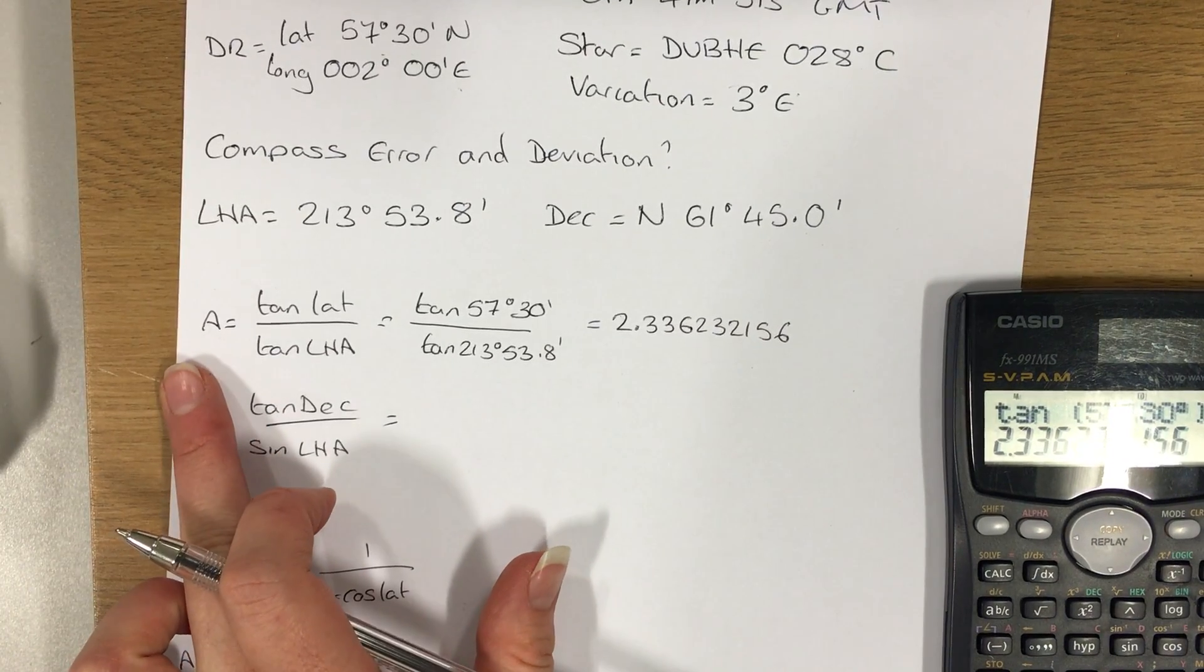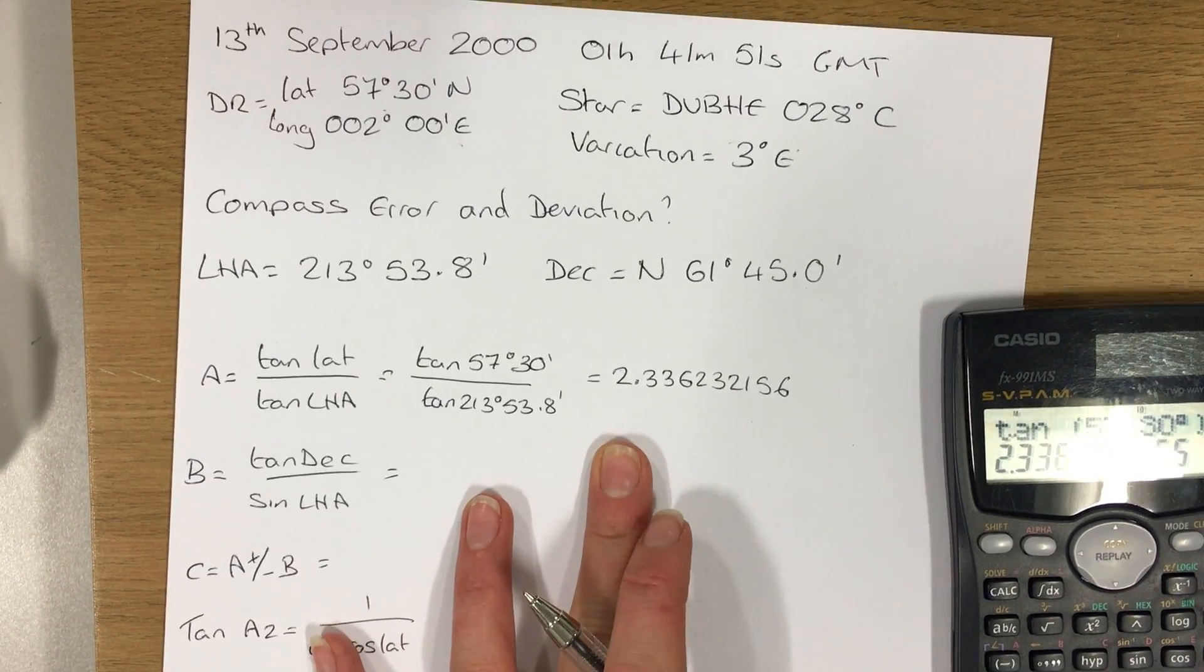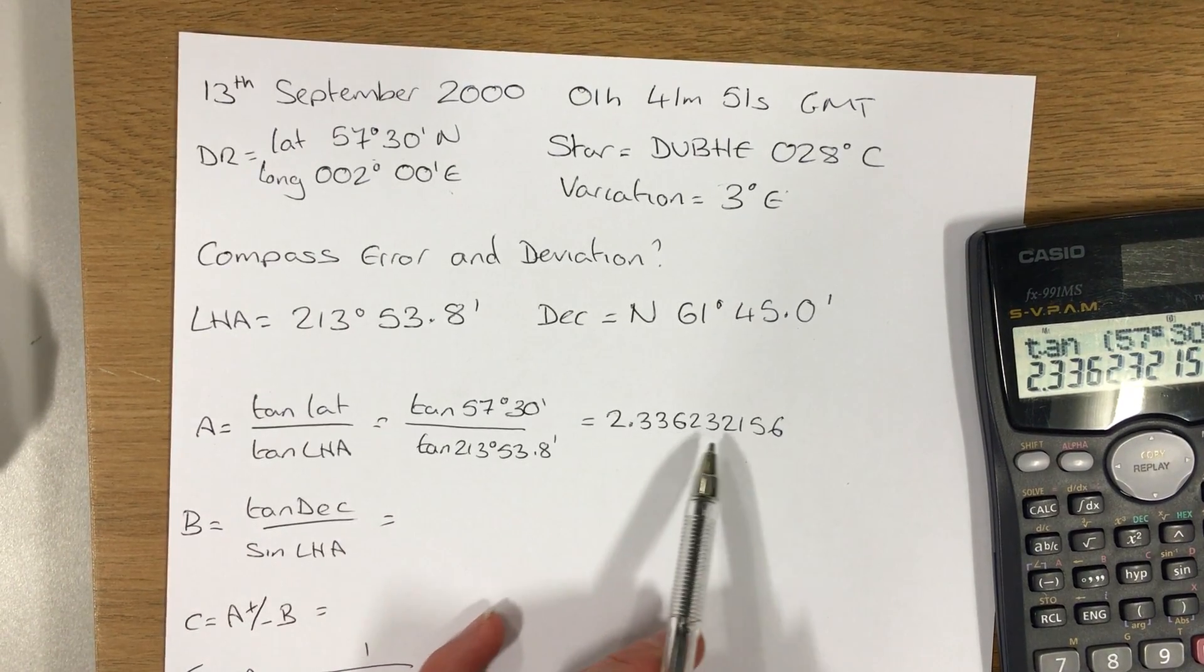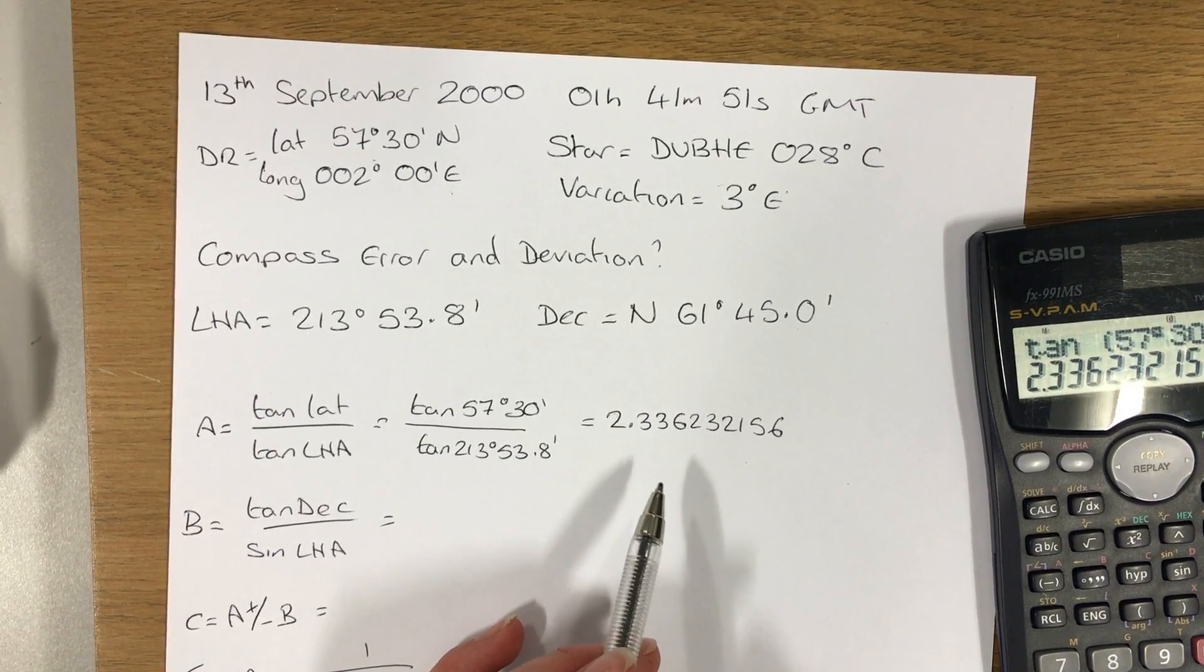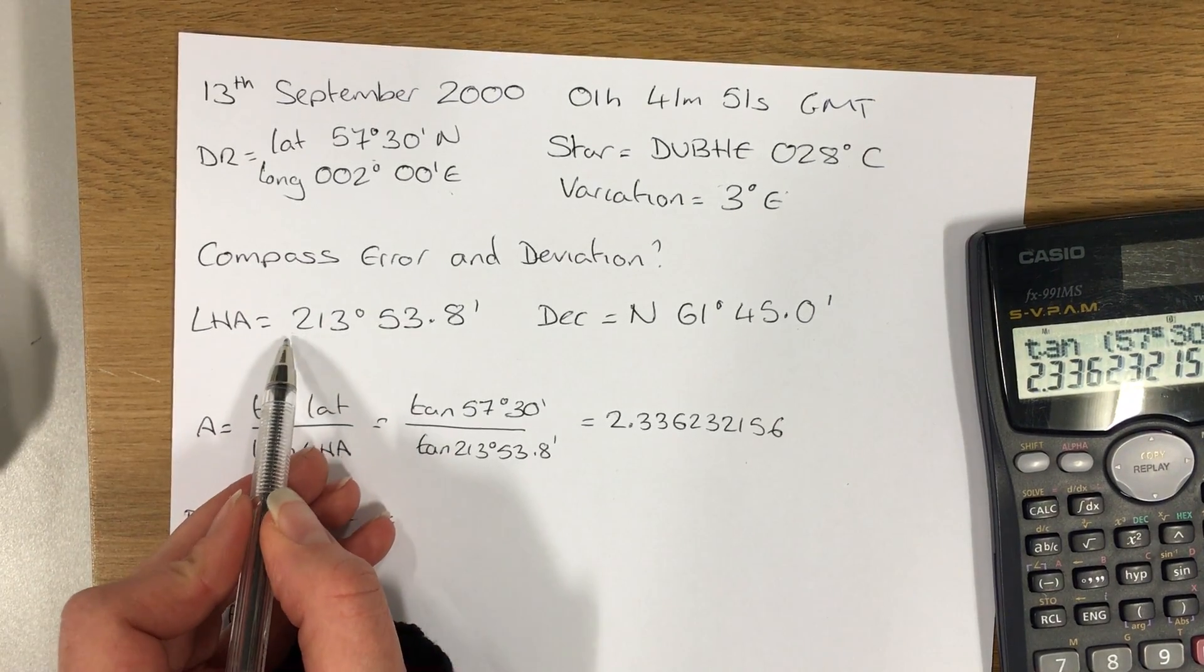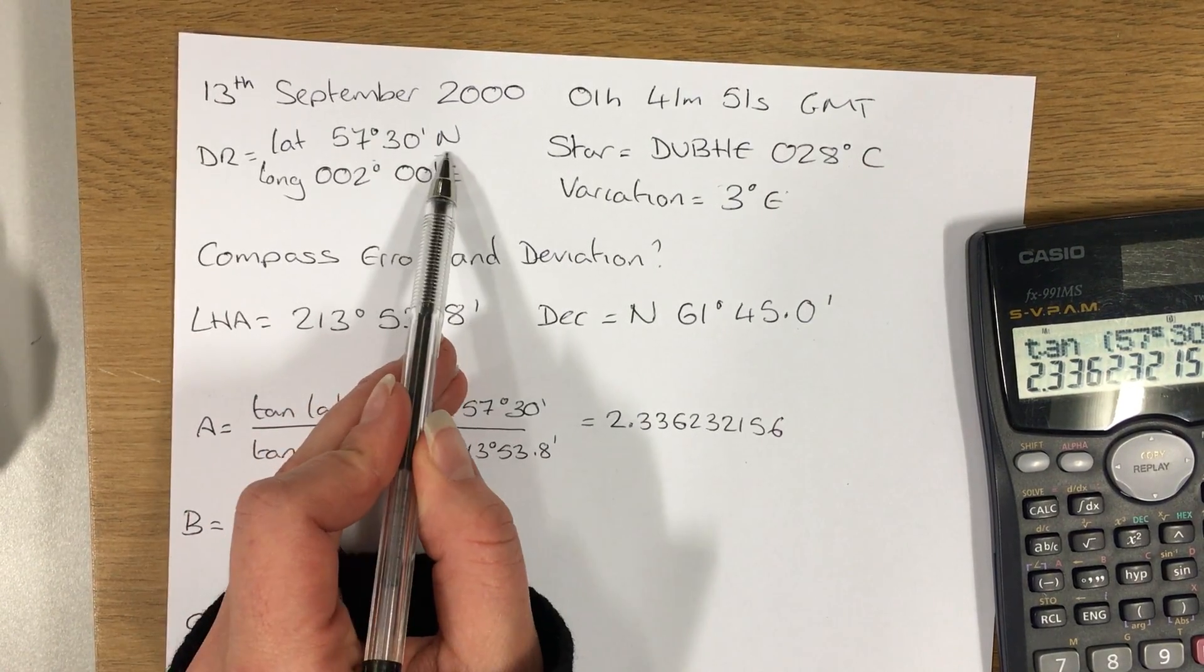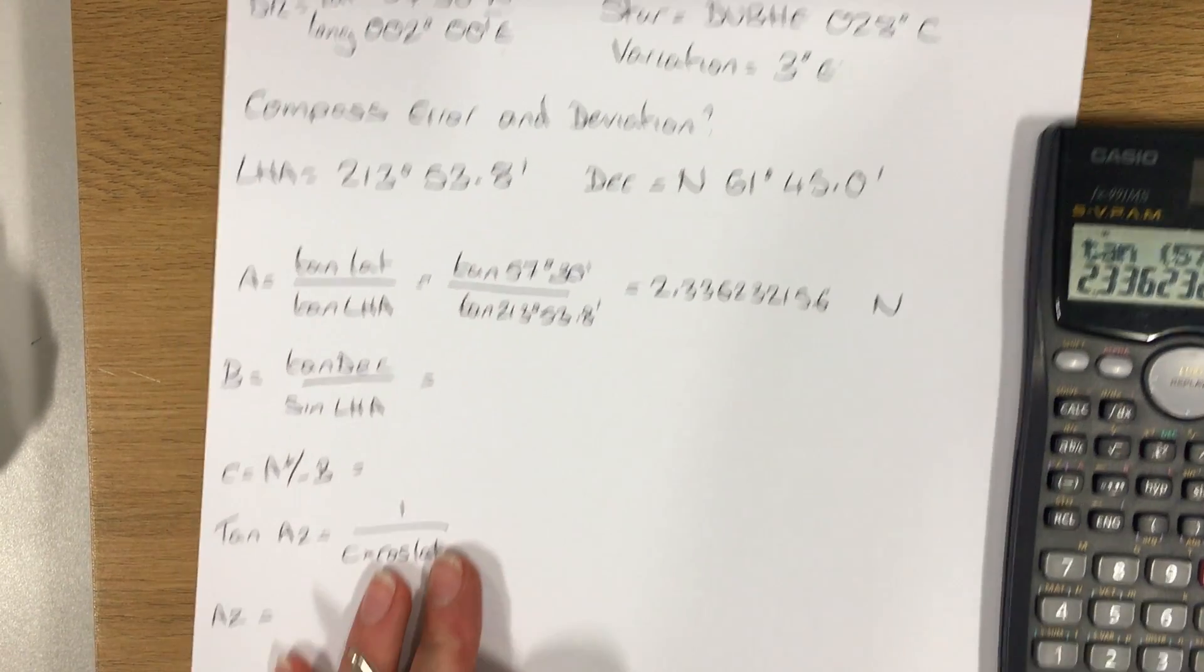Now A needs to be given a name. It's going to be named north or south, and which one that is depends on my latitude and LHA. So it's named opposite to my latitude except when my LHA lies between 90 and 270.